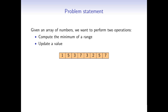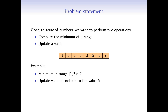Let's look at an example. Here is an array with 8 elements, and we want to compute the minimum of the range 1 to 7. The element at index 1 is included and the element at index 7 is not, so there are 6 elements in the range and the minimum is 2. Now we update the value at index 5 to 6 — that was our old minimum. Then we compute the minimum of range 3 to 8; index 8 is not included, and the minimum is 3.